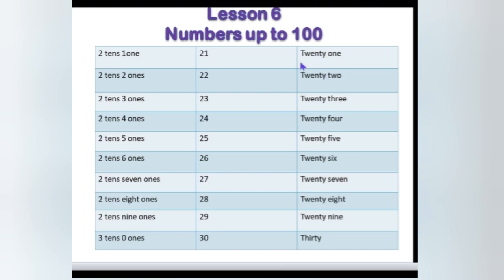We have already learned 20. T, W, E, N, T, Y. 20 plus 1, O, N, E — 1. So 21.